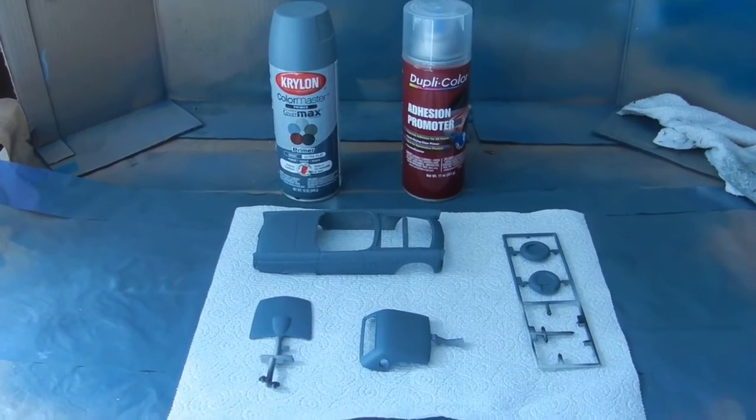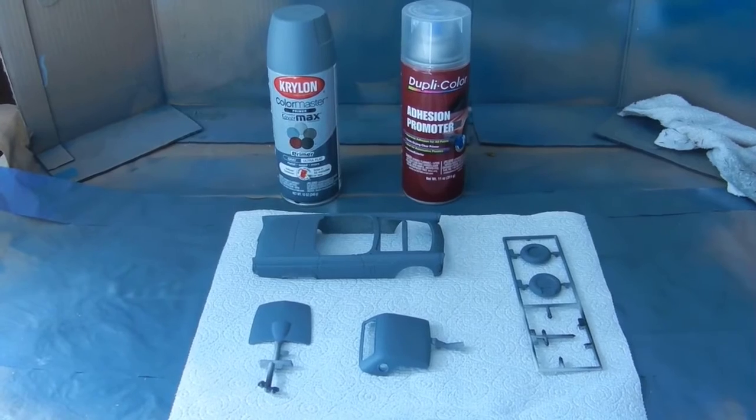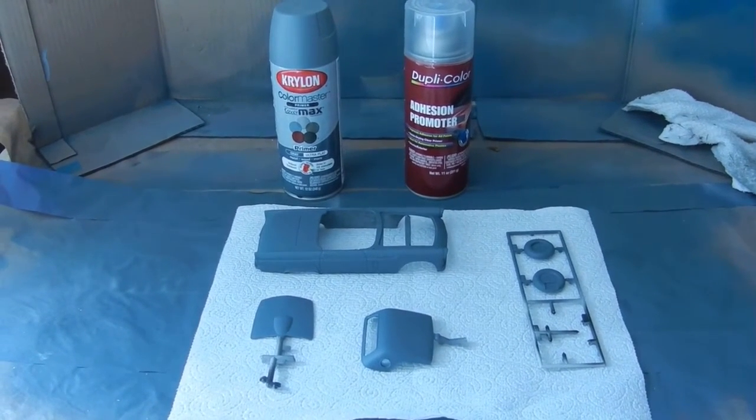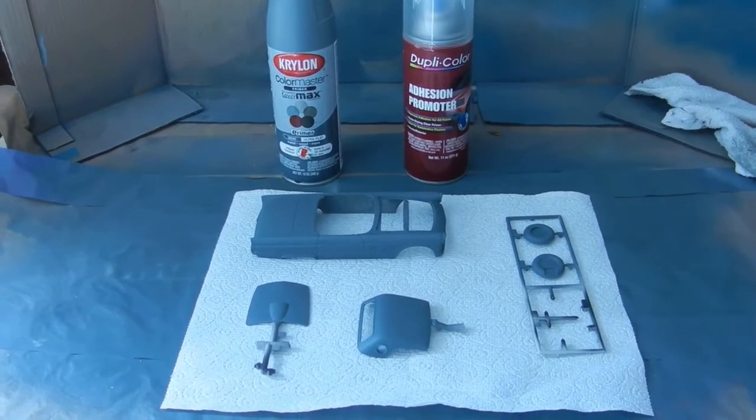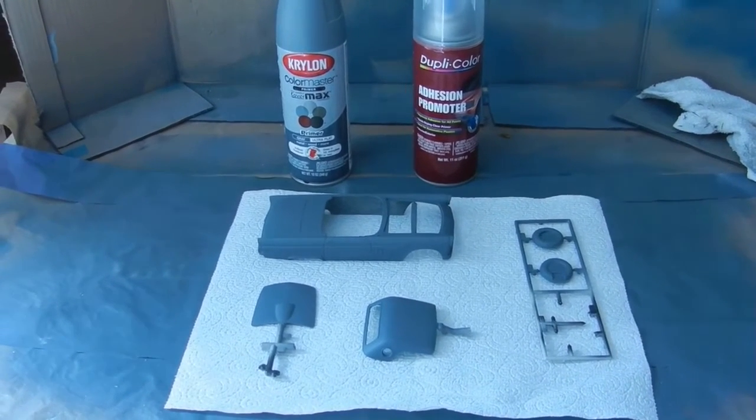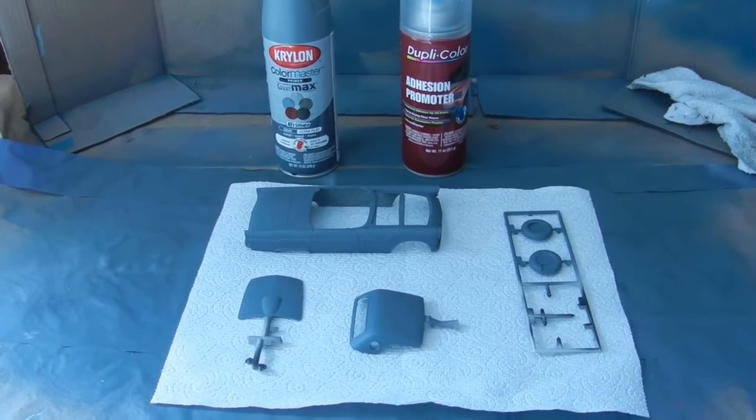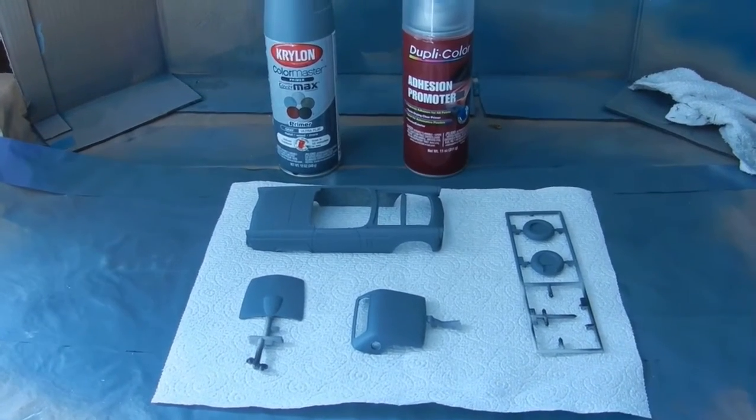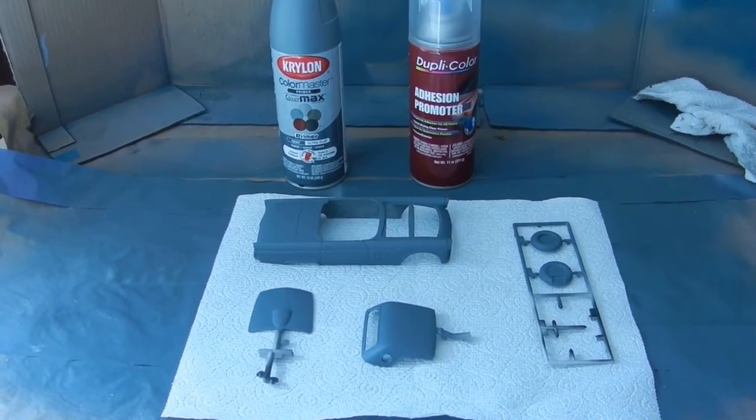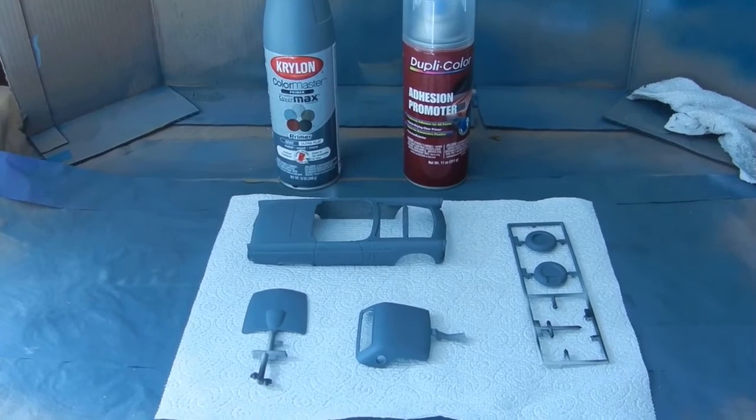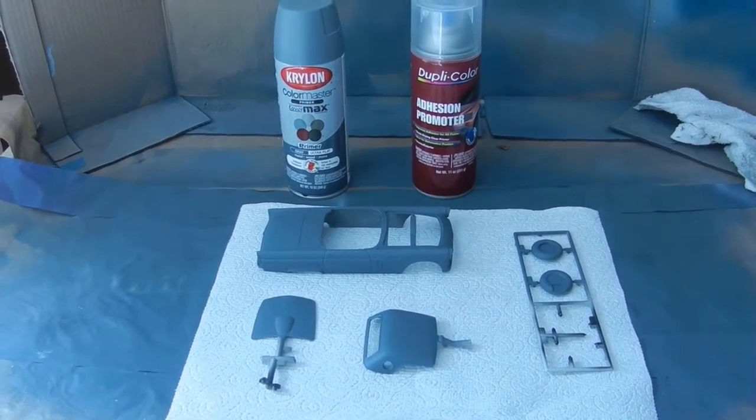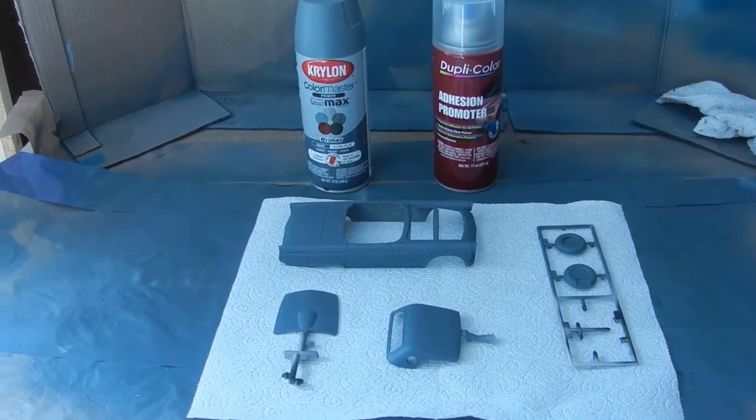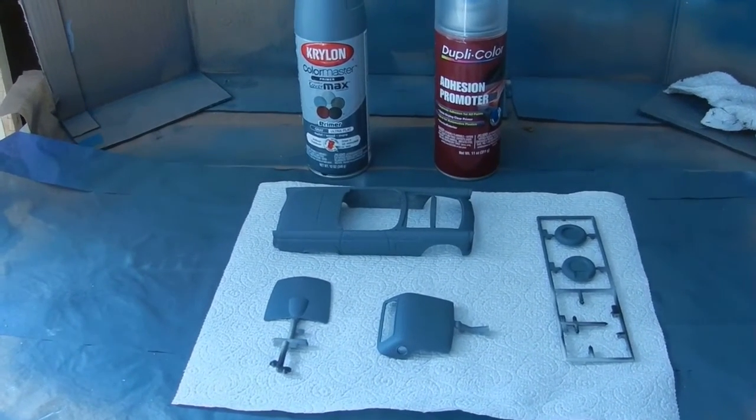We're back out here in the garage and I took the car body, the hood, the hard top and the spare wheel out here. I basically sprayed it with some adhesion promoter from Duplicolor and once that was done I did the Krylon primer gray ultra flat.